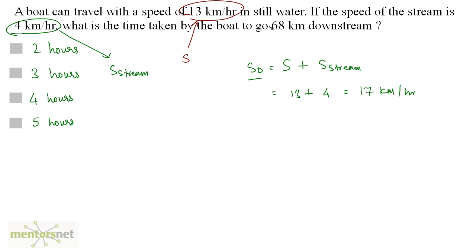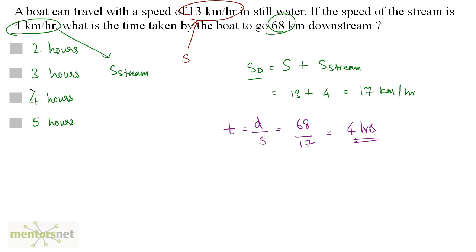Now we have the speed and the distance; we want time. Time equals distance divided by speed. The distance is 68 and the speed is 17, so 68 divided by 17 gives 4 hours as the time taken to go downstream.